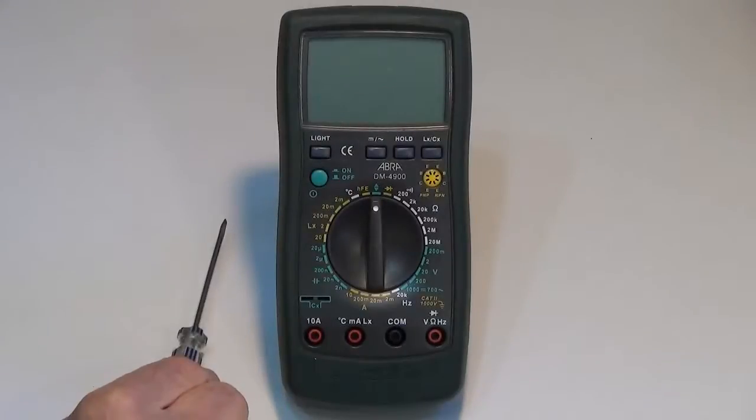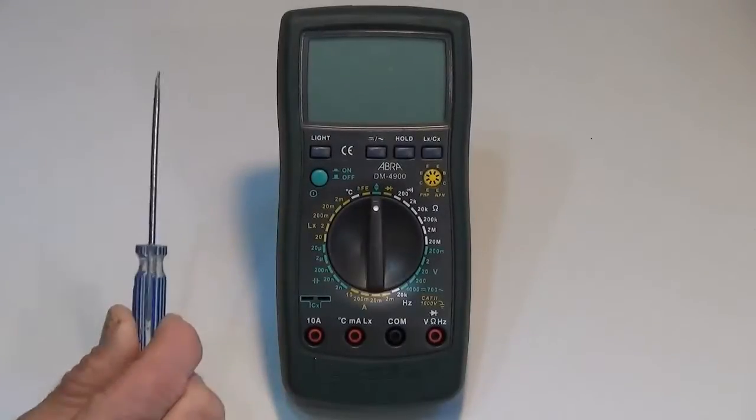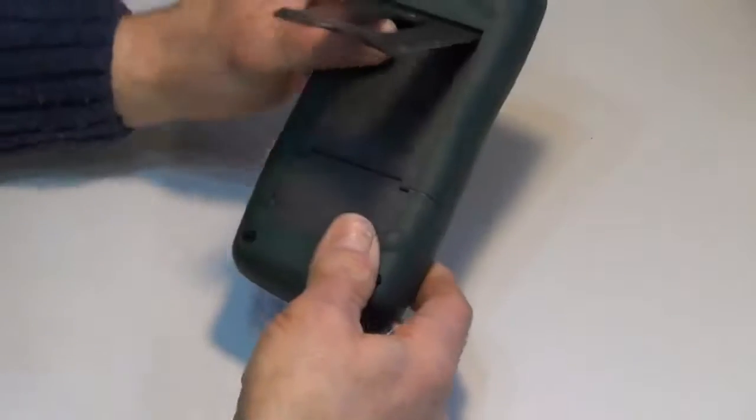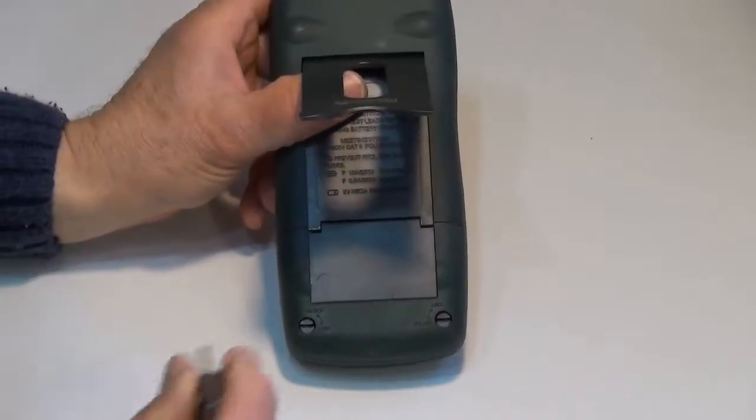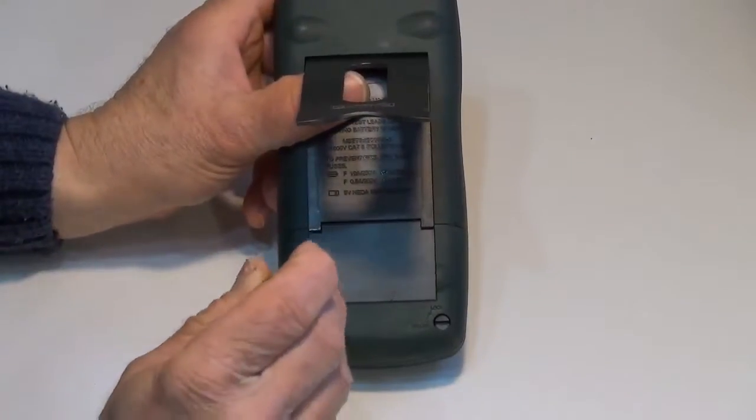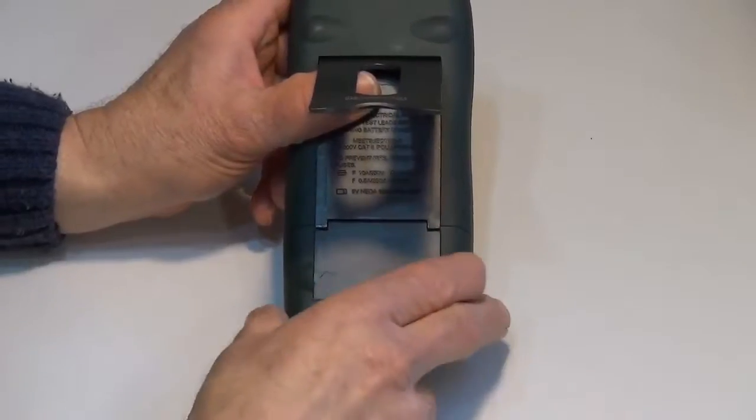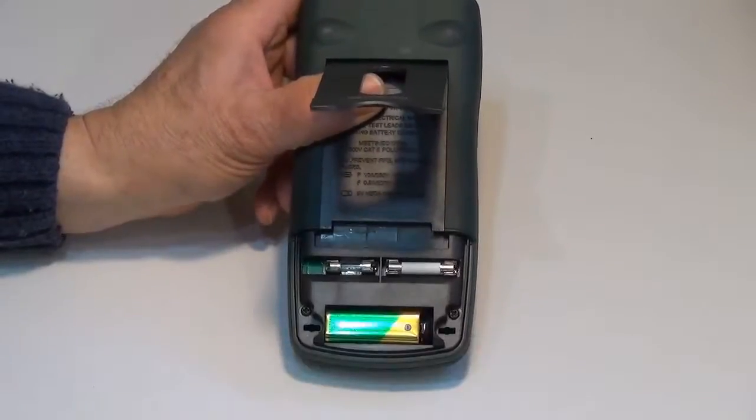To replace or check the fuses you'll need a slotted screwdriver. We'll turn the meter around and in the back we'll remove the two screws. Carefully remove the back panel and do not lose the screws.